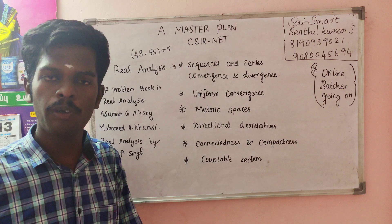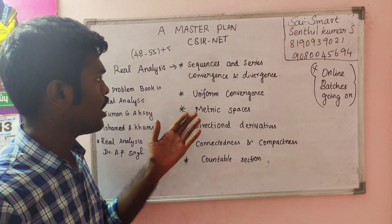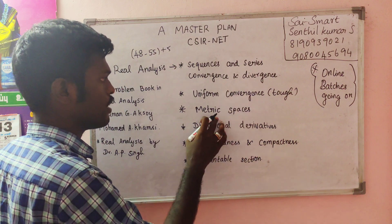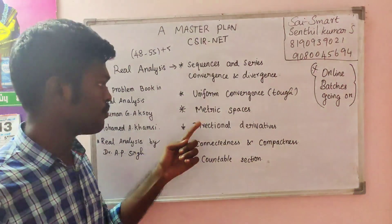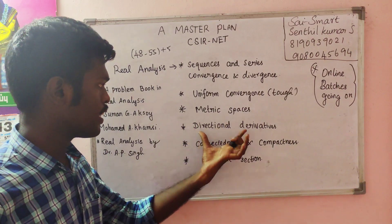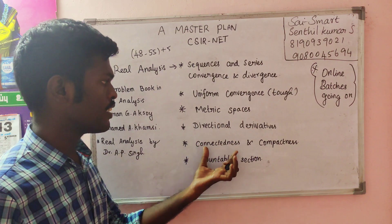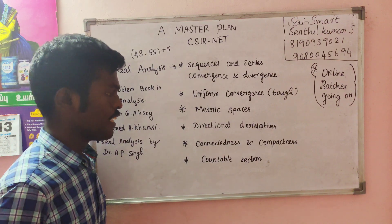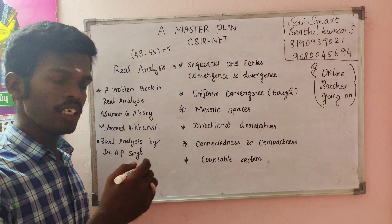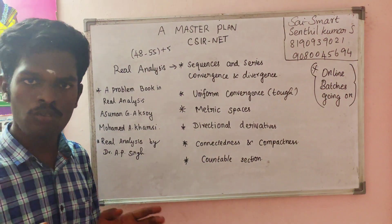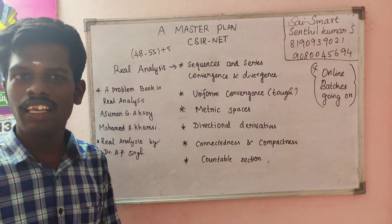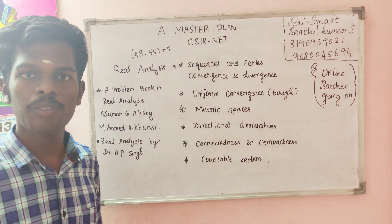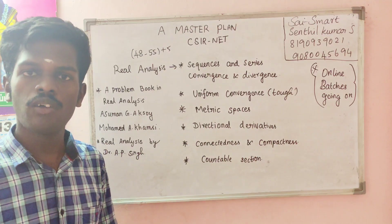There are three types of things. We can do it in small numbers. We have to use the section — this is the problem. Connectedness and Compactness. Countable section — countability is already learned. In the content, you can use the exam and you can use the problem.